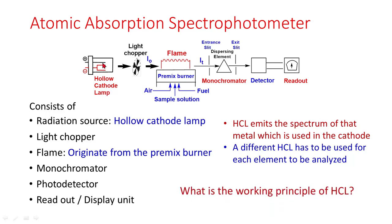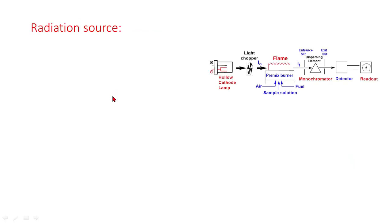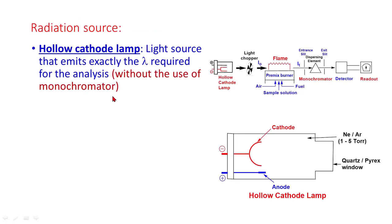What is the working principle of hollow cathode lamp? Hollow cathode lamp is a light source that emits exactly the wavelength required for analysis without the use of monochromator.